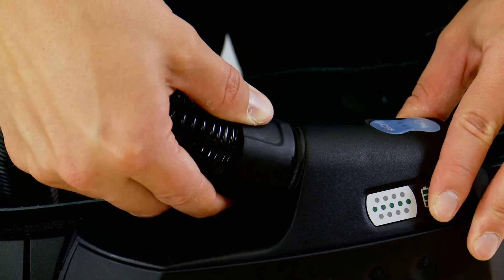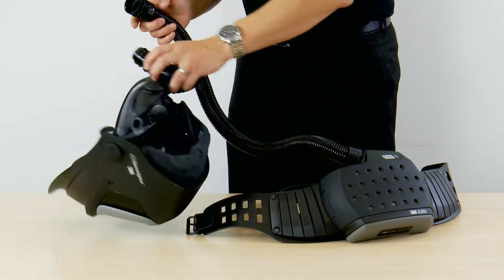The breathing tube slips in with one twist and clicks into your welding helmet using the quick release system.